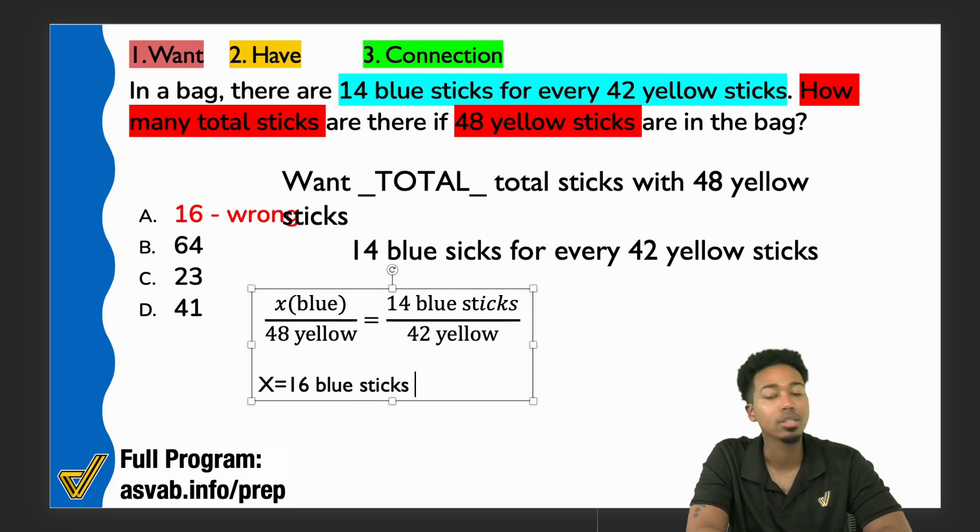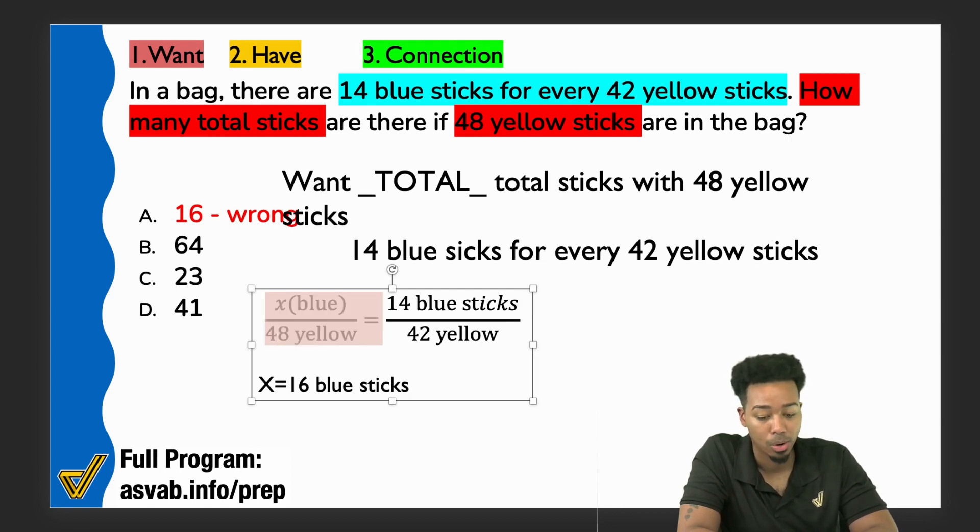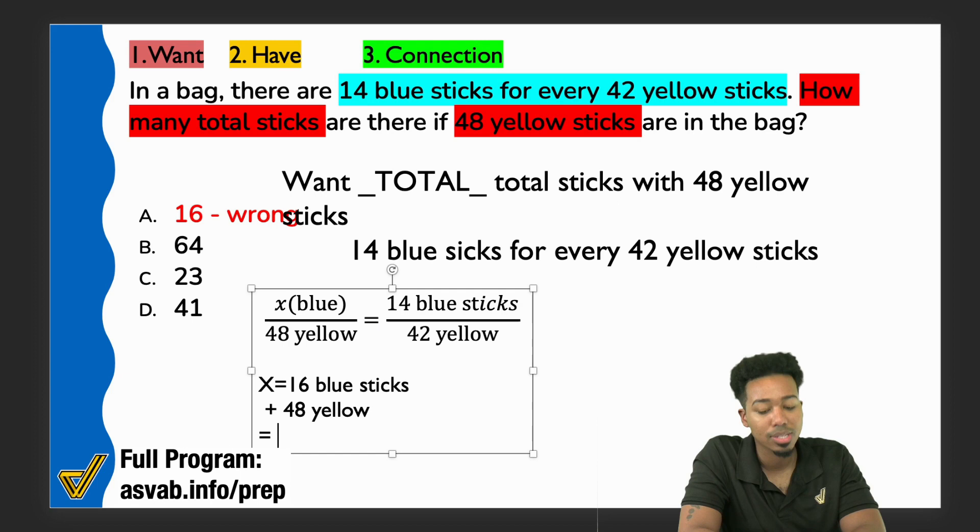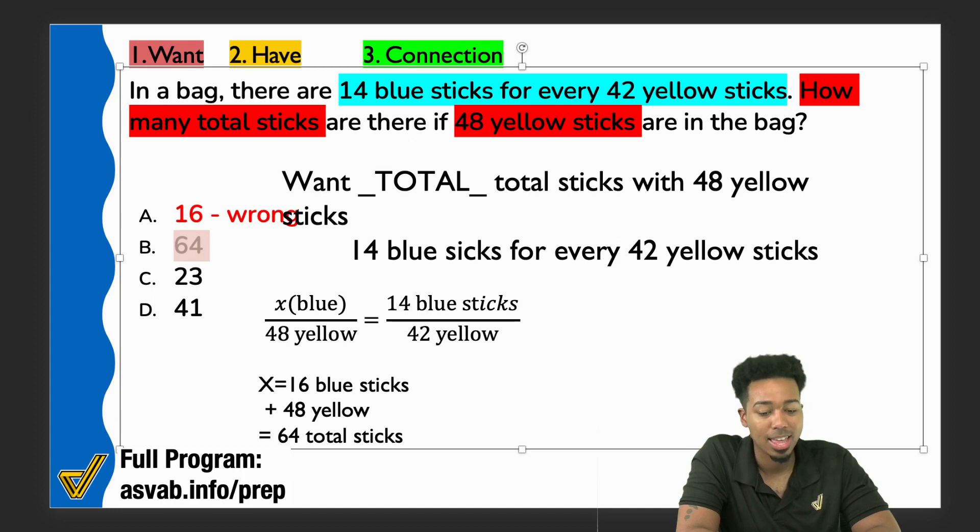And so when you solved for the 16, this is actually 16 blue sticks, not the total number of sticks. If you would have gotten to this point, how do you actually solve for the total? Exactly, that's right. You'll add the 16 back with the 48 that you have. Because you have 16 blue sticks and that goes with the 48 yellow. You add the 48 yellow and that's going to equal 64 total sticks. And that's what will give you the answer choice B. That would be the correct answer.